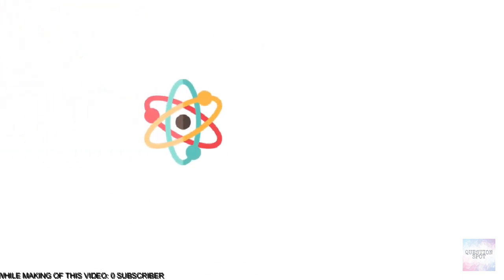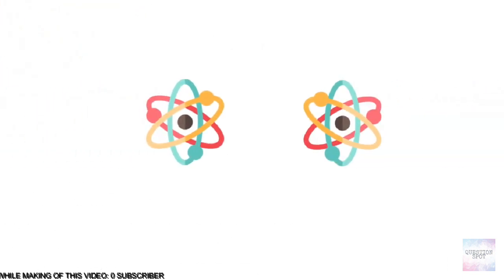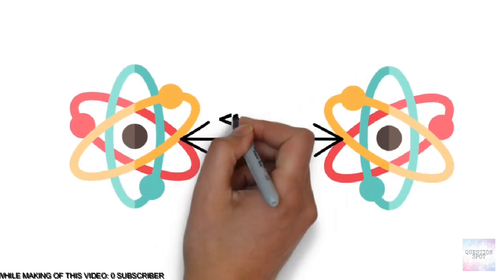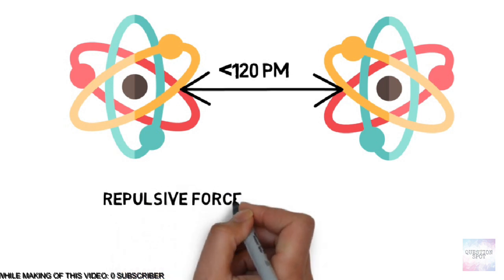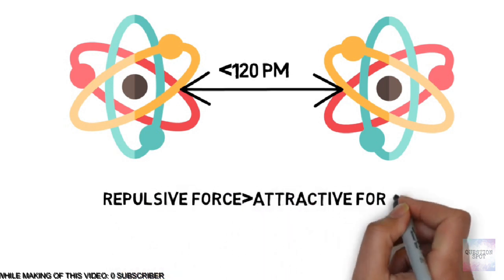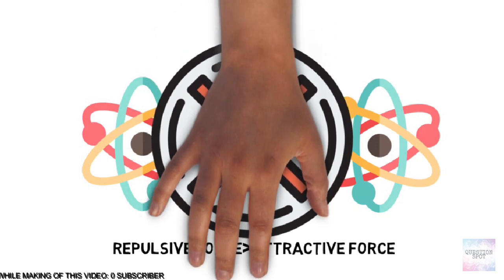But when carbon makes 4 bonds, the distance between two nuclei of carbon decreases extremely. Thus here, the repulsive force between nuclei increases and the attractive force decreases. Thus carbon never makes 4 bonds with each other.